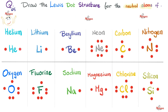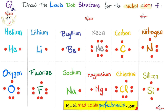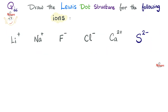Here are the answers in color — pause and review. Notice these were neutral atoms. Now, can we draw Lewis dot structures for ions? Tip: first draw the neutral element, then look at the charge. If it's positive one, remove one electron; positive two, remove two electrons; negative two, add two electrons.